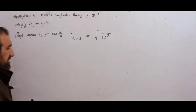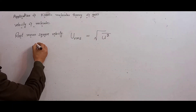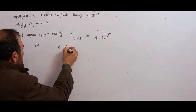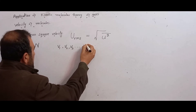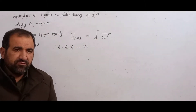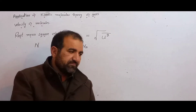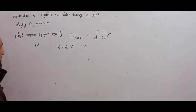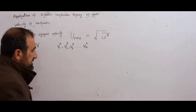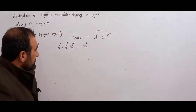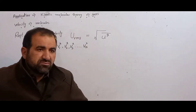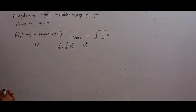Suppose I have n number of molecules. These n number of molecules have velocities v1, v2, v3, and so on up to vn. The square values of these velocities are v1², v2², v3², up to vn². These are the squares of the velocities.